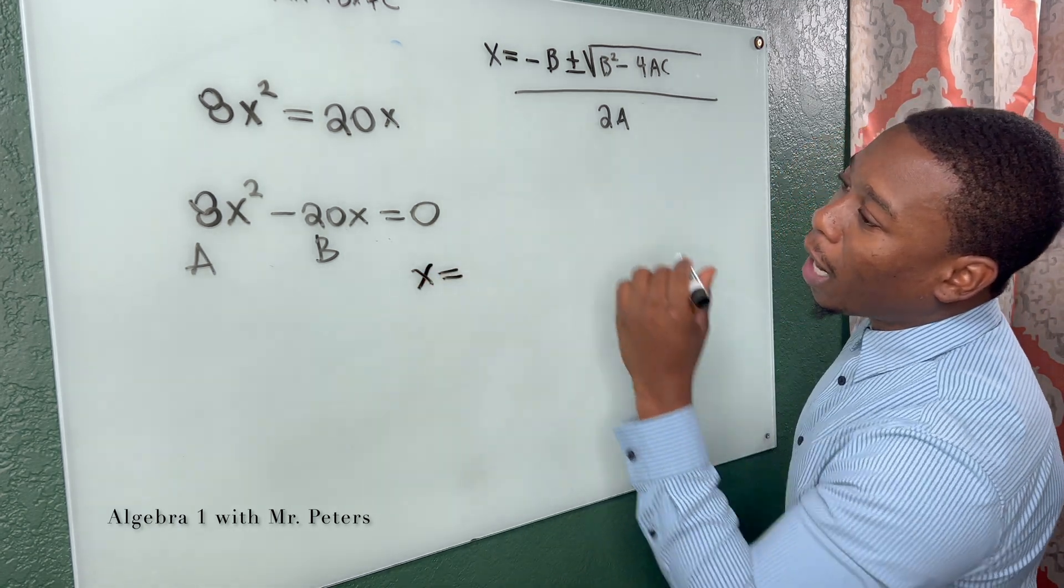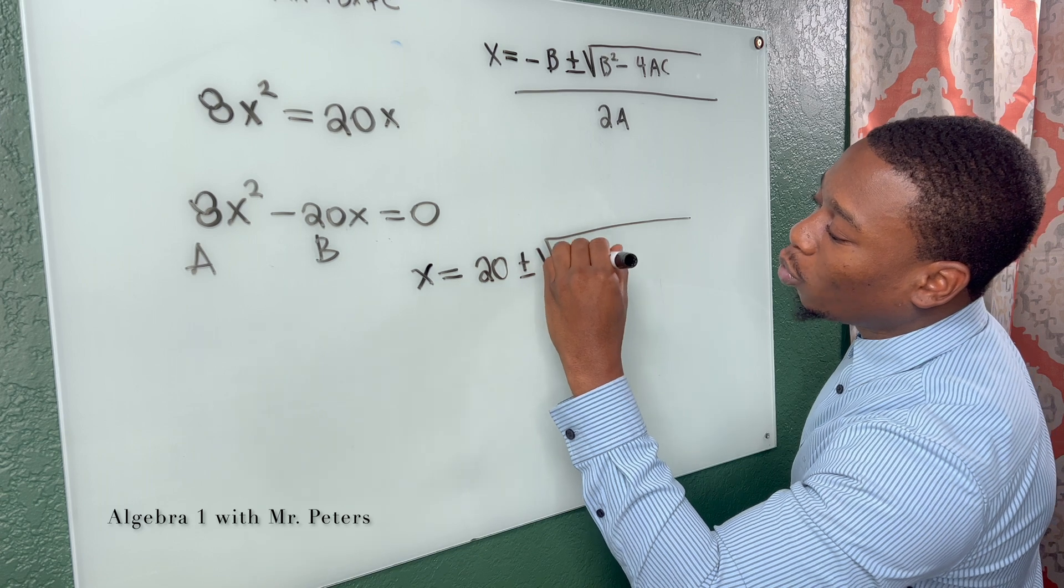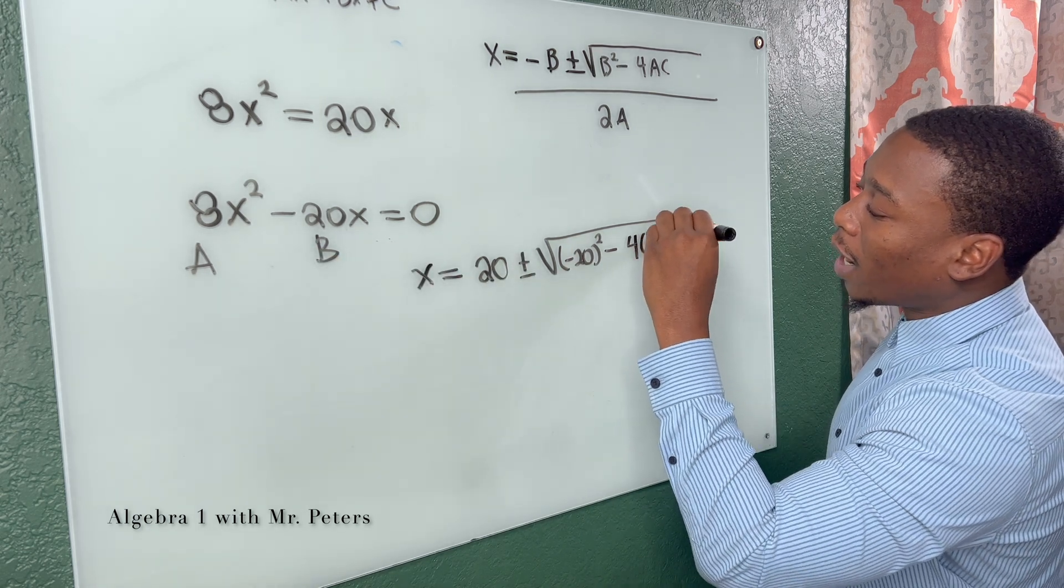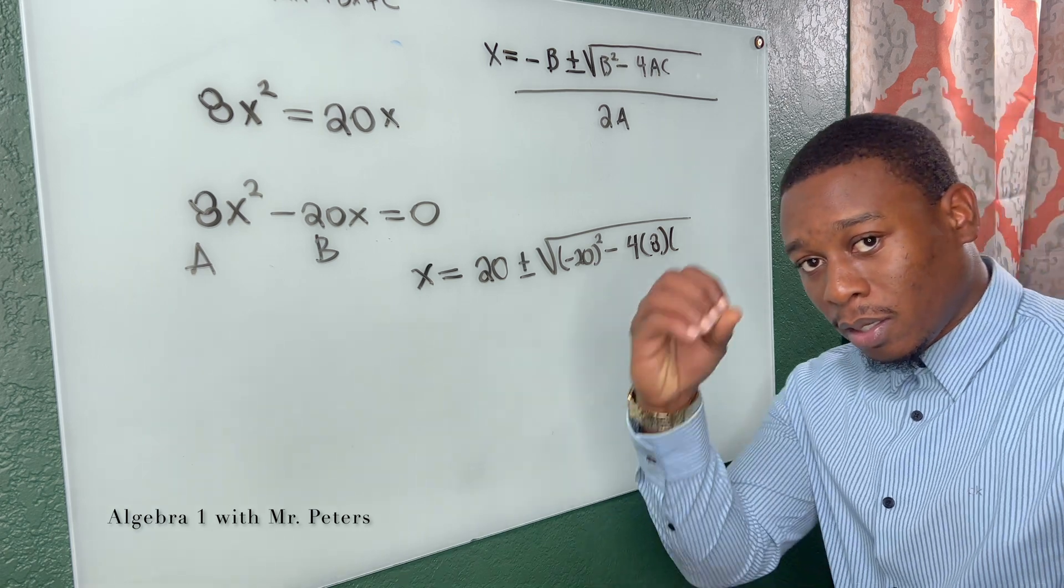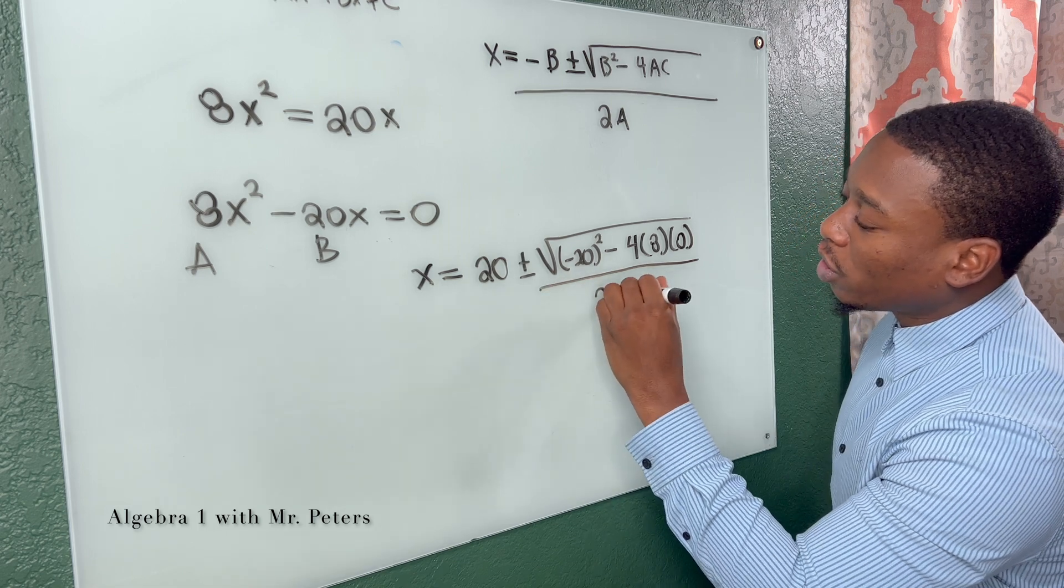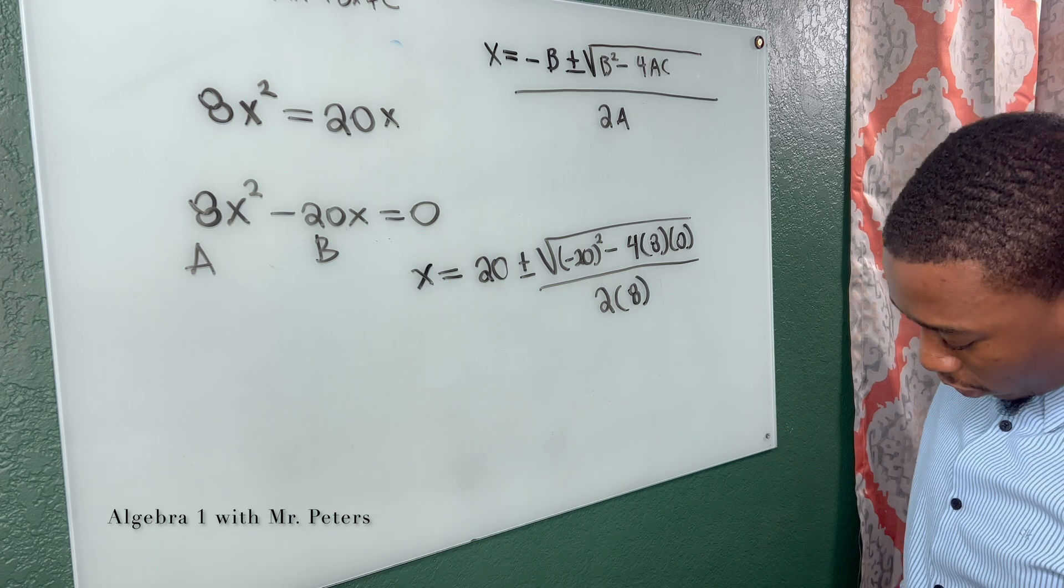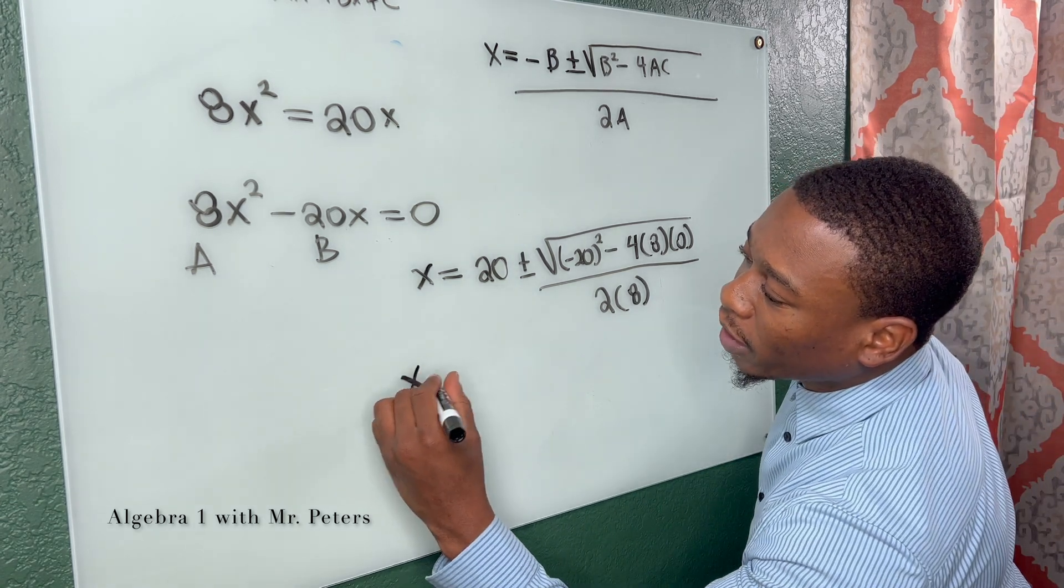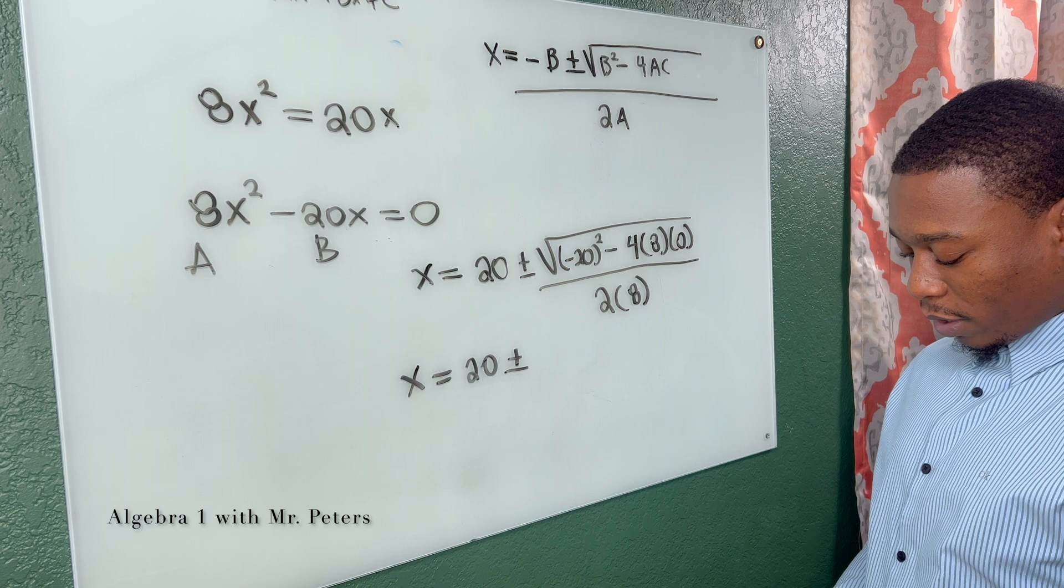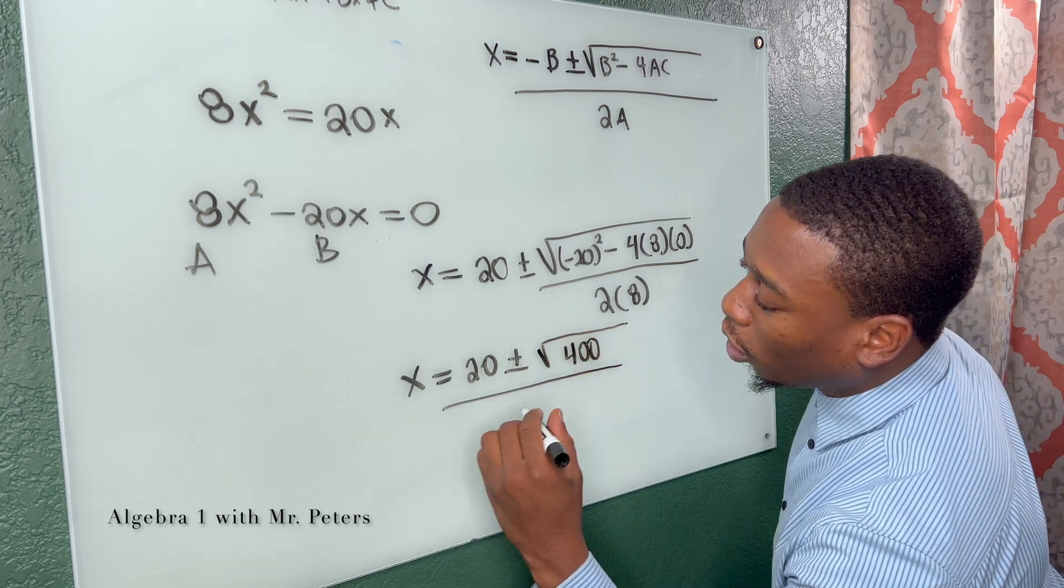So we have x is equal to opposite of b, positive 20 plus or minus the square root of negative 20 squared minus four times a, which is eight, times c. There is no c. So what do we plug in? Zero. There's no c. All over two times a, which is two times eight. So at this point, let me grab my calculator.